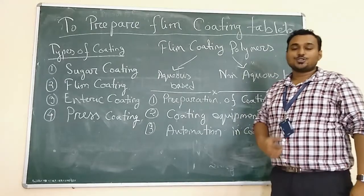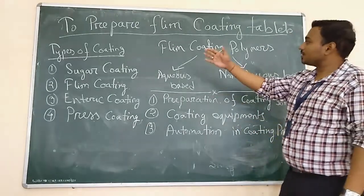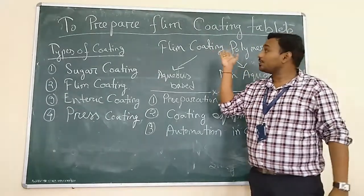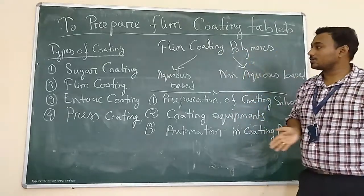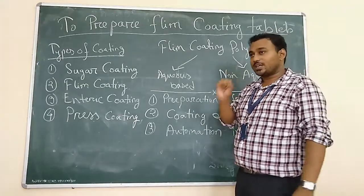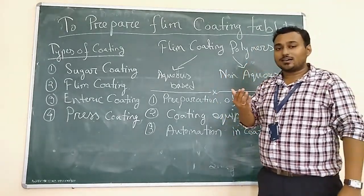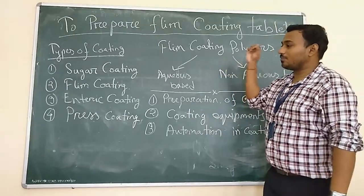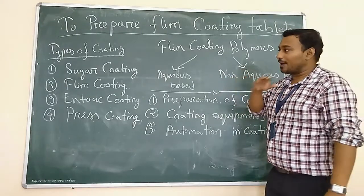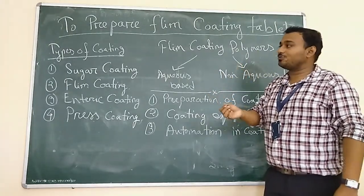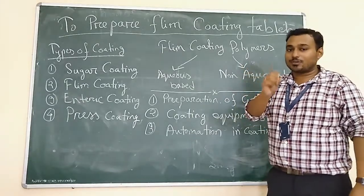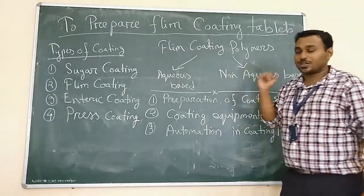Students, today I am going to discuss how to prepare film coating of tablets. This is a practical situation to prepare film coating of tablets. First of all, we have to know what is coating. Coating is an external layer of any formulation. It may be tablets, granules, or any other formulation. When we apply an external layer to improve the characteristics of a particular formulation, that is called coating.